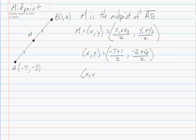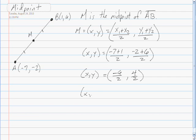So the midpoint x, y is equal to negative 6 over 2 and 4 over 2. And so x, y is equal to negative 3, 2. There you have it, midpoint.